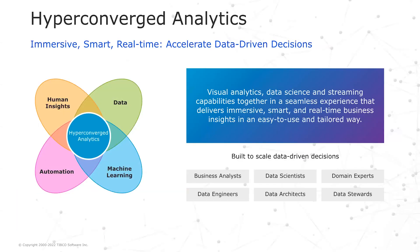Looking at the analytics markets, we see a great convergence — a convergence of technologies, with human insights, data, machine learning and automations coming together, and we also observe a convergence of user types. This convergence is something Typical uniquely can deliver on with what we call hyperconverged analytics. Hyperconverged analytics brings visual analytics, data science, and streaming capabilities together in a seamless experience that delivers immersive, smart, real-time business insights in an easy-to-use and tailored way, built for data-driven decisions at scale, both by humans and automated processes.